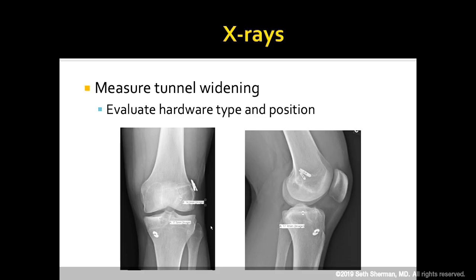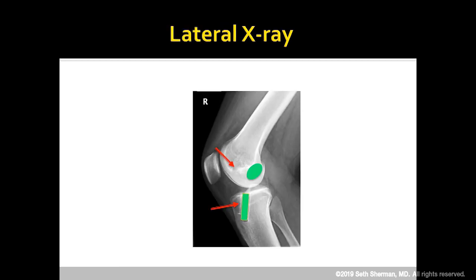We need to get really good at scrutinizing our x-rays to measure tunnel widening and evaluate hardware type and position. On the lateral x-ray, we can see on the femoral side that the tunnel is way anterior versus where anatomic ACL reconstruction belongs. On the tibia, the tunnel may be in a reasonable position but looks significantly wide.